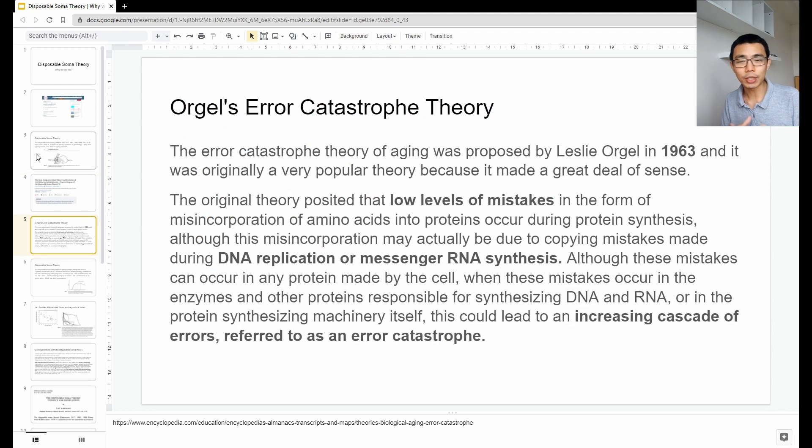So, before we go into that, I want to talk a little bit about what is Orgeo-Error Catastrophe Theory. Before Professor Kirkwood actually talked about DST, disposable soma theory, short form DST, Dr. Lassi Orgeo actually talked about the Error Catastrophe Theory in 1963, which means that why animals die is because those kind of mistakes that accumulate during the DNA replication, RNA synthesis and protein synthesis process.